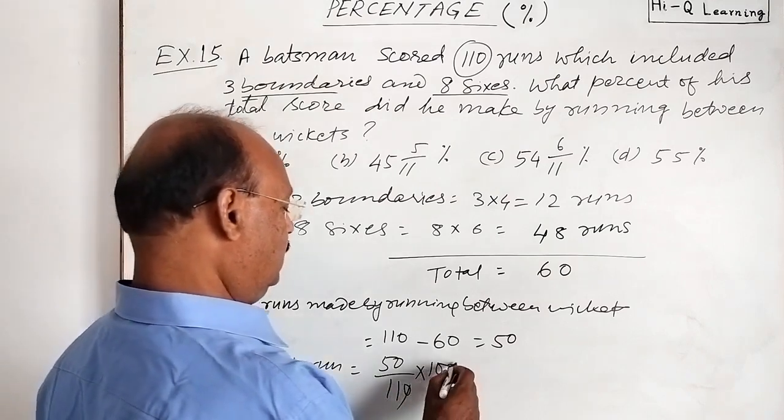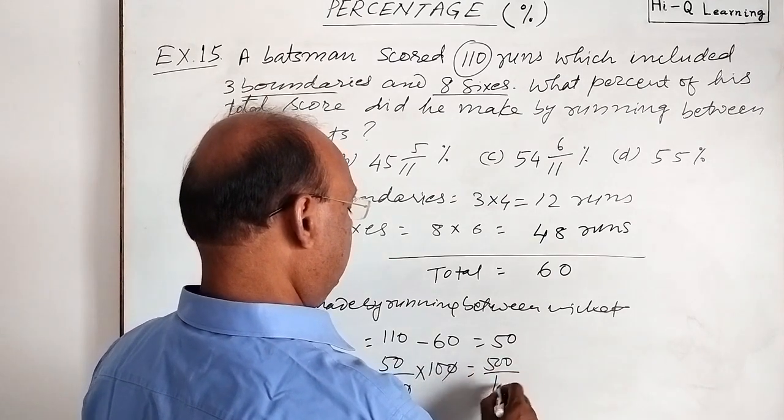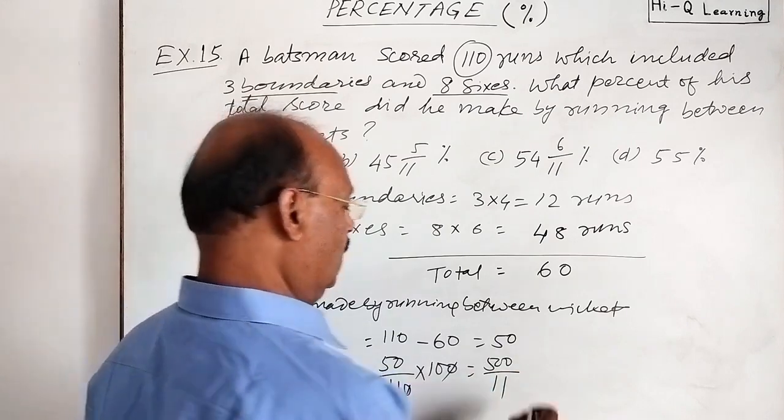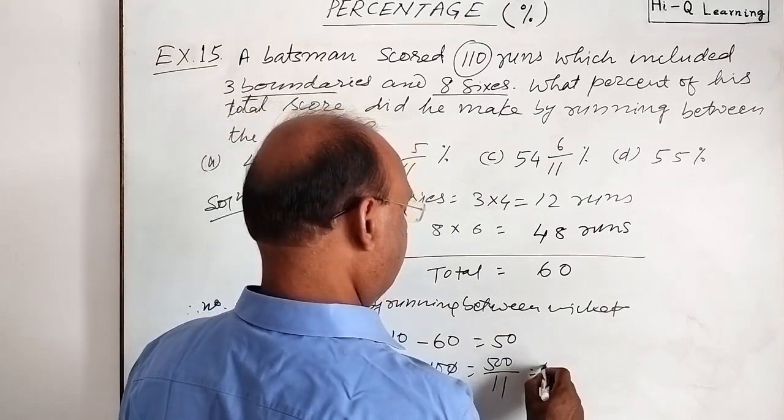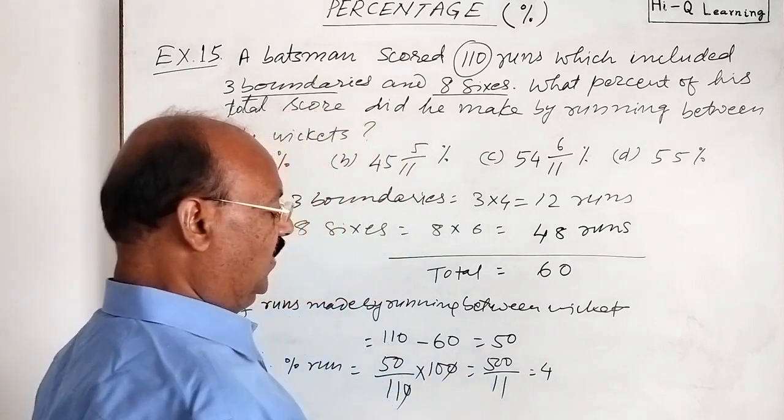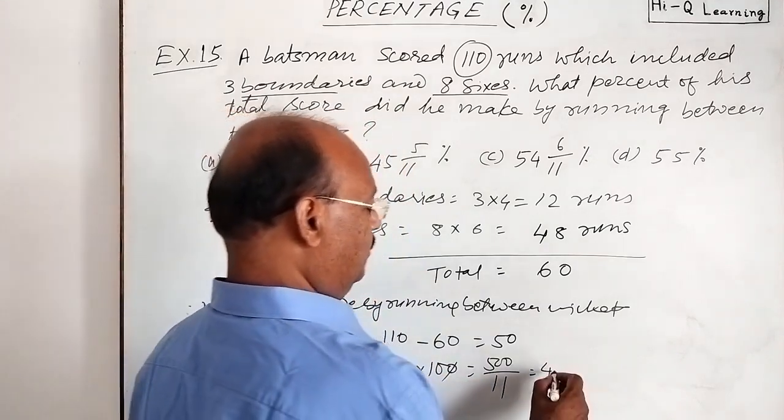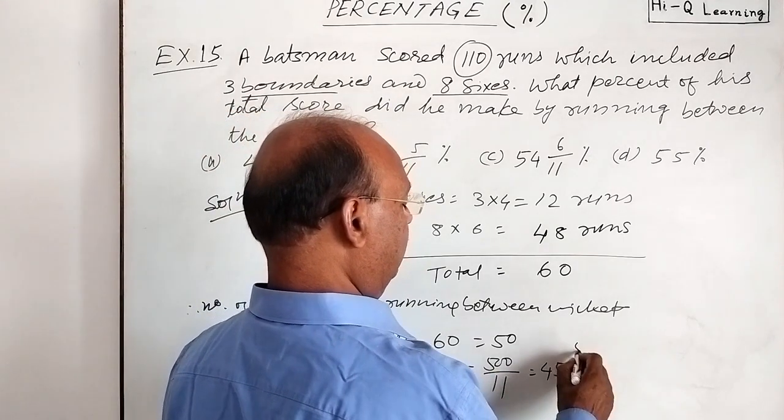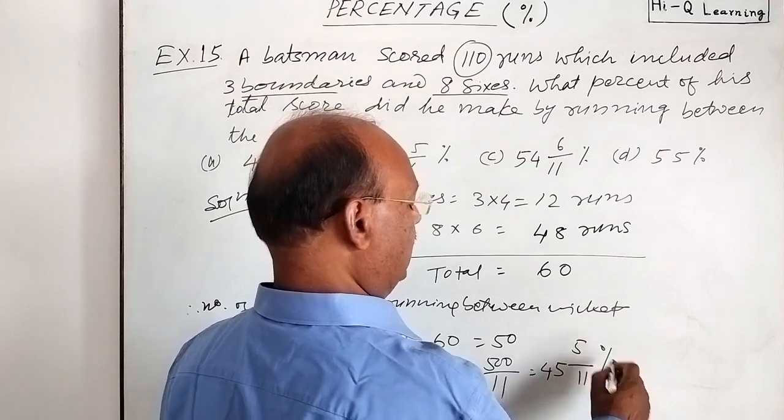10 will be cancelled out. So this is cut to 500 by 11. Let us divide it. This will be 11 4 goes 44. Then 60. 11 5 goes 55. So 45 and 5 by 11 percent.